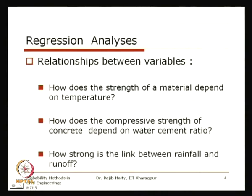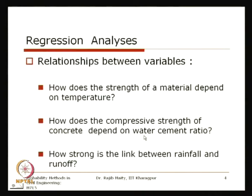In civil engineering, this type of analysis answers questions such as: how does the strength of a material depend on temperature? If temperature varies, how does the strength increase or decrease? Or, how does the compressive strength of concrete depend on the water-cement ratio — if we increase the water-cement ratio, what happens to the compressive strength? The compressive strength may also depend on other factors beyond just the water-cement ratio, so that one target variable with more than one dependent variable brings multiple regression into the picture.